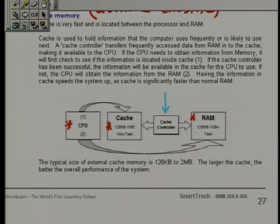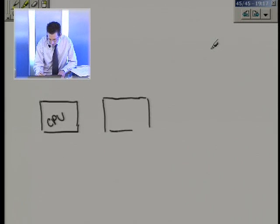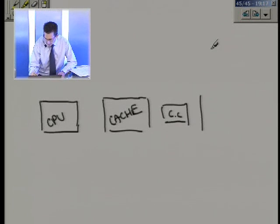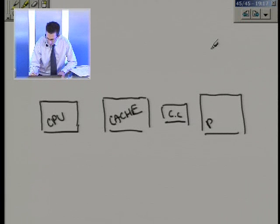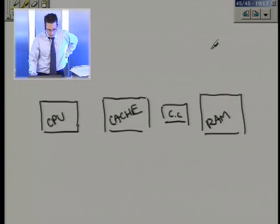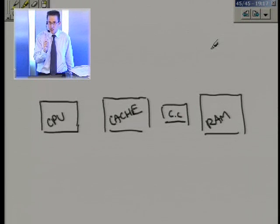We're actually going to do this on a separate piece of paper, but the diagram is the same so you can just annotate your ones in the notes if you want. We've got the CPU here, we've got cache sitting here, we've got the cache controller — CC for cache controller — and we've got RAM. Now, there are two jobs that cache does for you.